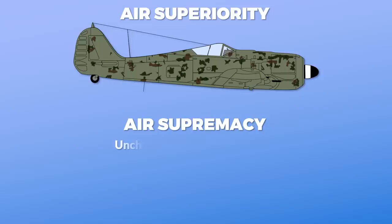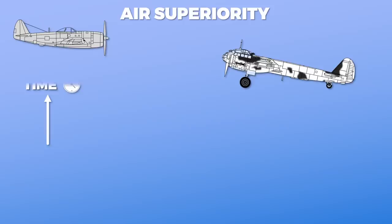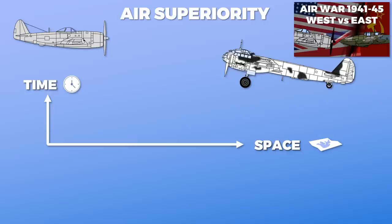Air superiority basically means that you can conduct air operations while preventing the enemy from doing the same. It is important to note that air superiority can be restricted in terms of time and space. This is one of the particular differences between the air war on the Western and Eastern Front in World War II. Due to the differences in space, available material, and doctrine,